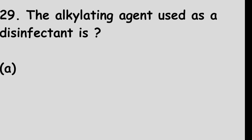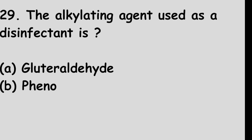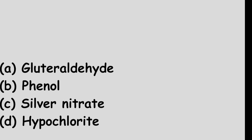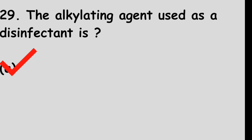Question number 29: The alkylating agent used as a disinfectant is — Option A: Glutaraldehyde. Option B: Phenol. Option C: Silver nitrate. Option D: Hypochlorite. The right answer is option A, glutaraldehyde.